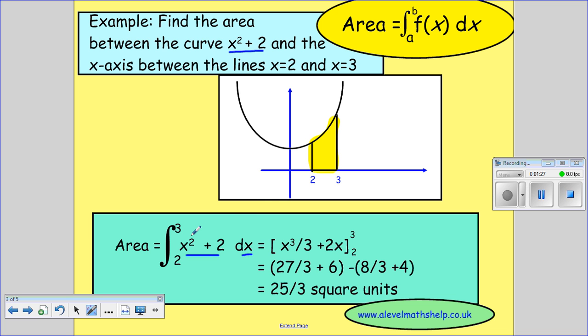And when we integrate, we add one to the power and then we divide by the new power. So this becomes x cubed over 3 plus 2x. And the square bracket notation tells us that we need to substitute in our higher limit and then take away the substitution of our lower limit.